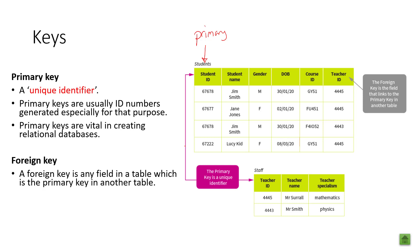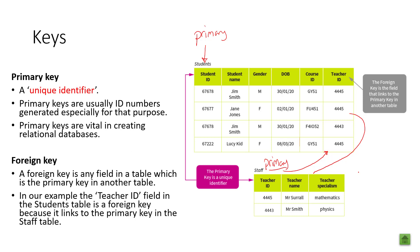A foreign key is any field in a table which is the primary key in another table. The teacher ID is a primary key in the staff table, but it is a foreign key inside the students table. For example, if Jane Jones has teacher 4445, we link down to the staff table and find that 4445 is Mr. Surrell who teaches mathematics. That's how a foreign key works — it links the primary key in another table.